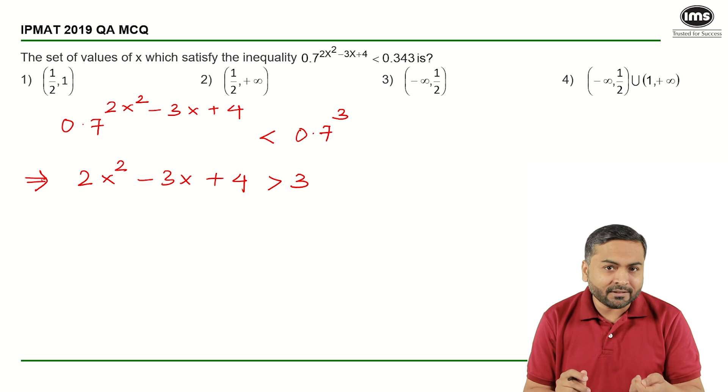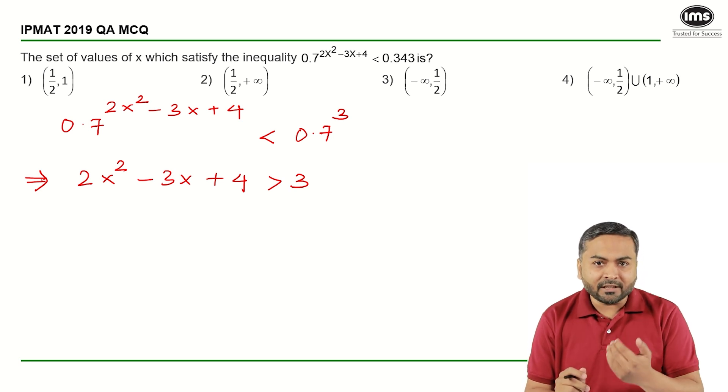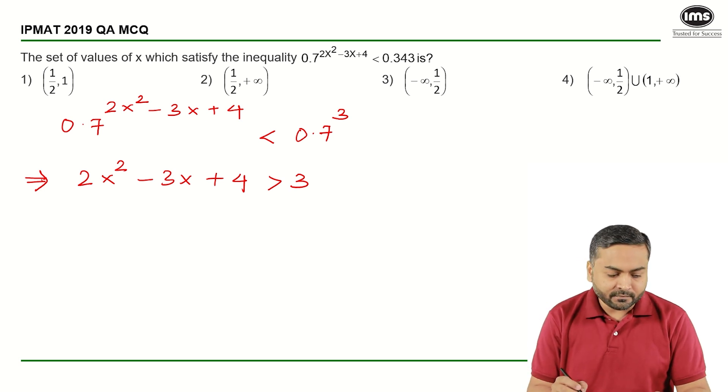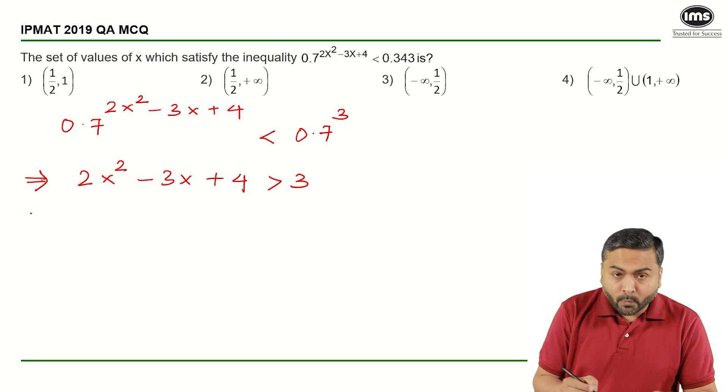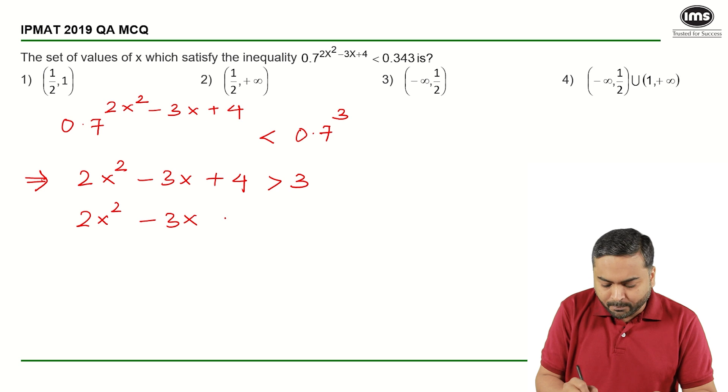The power on the left hand side should be greater than the power on the right hand side, which will now turn out to be 2x² - 3x + 1 greater than 0.